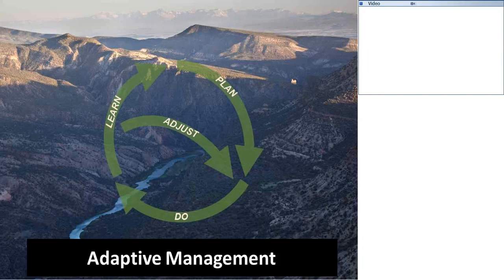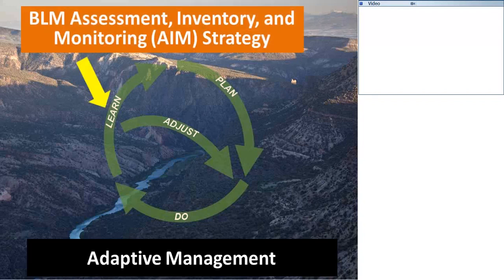In the context of multiple benefits and multiple scales, we're also trying to improve our ability to do adaptive management. This is a structured decision-making process where you first plan what you're trying to do, then you actually do it, and then — a really key step — you learn from what you did and make adjustments if what you're doing needs to change.